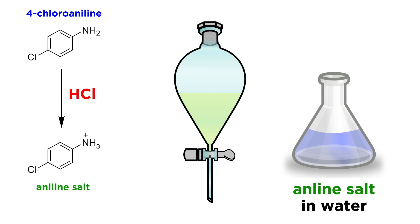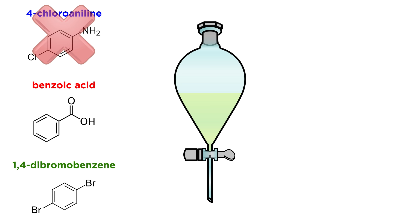So what's left in the ether? There is benzoic acid, and there is dibromobenzene. As you might guess, the next step will be to add some base, since the acid will react, while the other compound will not, since it is not remotely acidic.